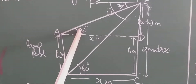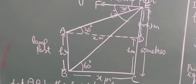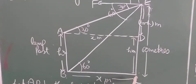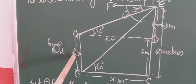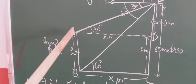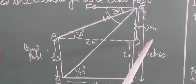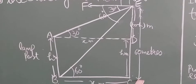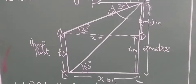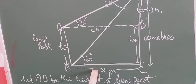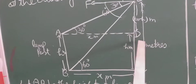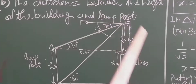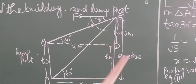That is why angle A will become 30 degree and angle B will become 60 degree. We have supposed the height of the lamppost is h meter, so AB equals DC equals h meter, because these are opposite sides of a rectangle. When CD equals h meter, then DE equals 60 minus h meter, because the whole height of the building is 60 meter. So DE will become 60 minus h meter, and we suppose BC equals x meter, so BC equals AD equals x meter, because these are also opposite sides of the rectangle.